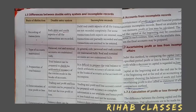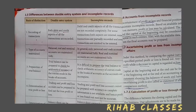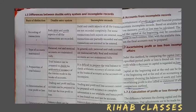In the single entry system, it is a partial record. Only cash and expenses transactions may be partially recorded. The debit and credit aspects of all transactions may or may not be recorded.